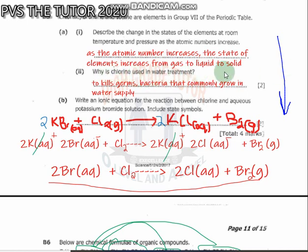Why is chlorine used in purification of water? It's very simple: just to kill germs or bacteria that commonly grow in water supply, so that we may not be sick of diseases, or to prevent water from being contaminated.